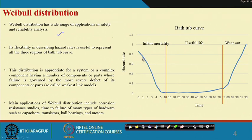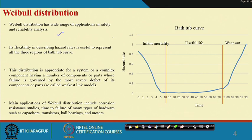Weibull distribution can model the infant mortality or burn-in phase, the wear-out or burn-out phase, and also the useful life or constant hazard rate phase. When the hazard rate becomes constant, it is basically the exponential distribution — meaning exponential is a special case of Weibull distribution.